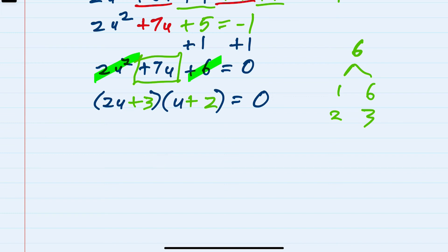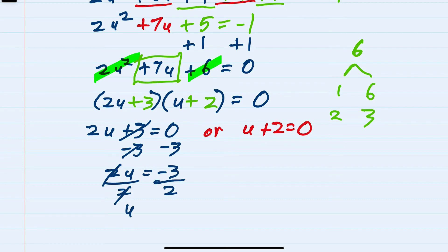And if two terms are multiplying to get 0, that means either the first is equal to 0 or the second is equal to 0. From the first, I can solve by subtracting 3 over to the other side to get 2u equals negative 3 and then divide by 2. I have u equals negative 3 halves.